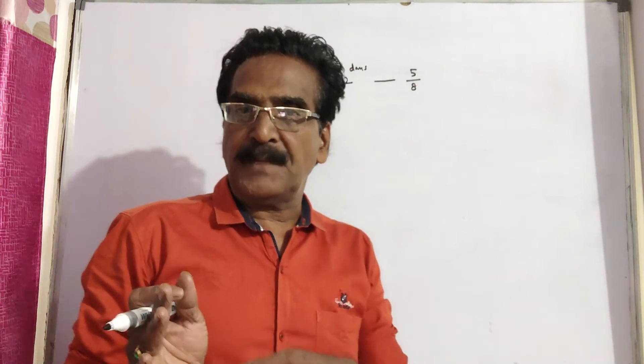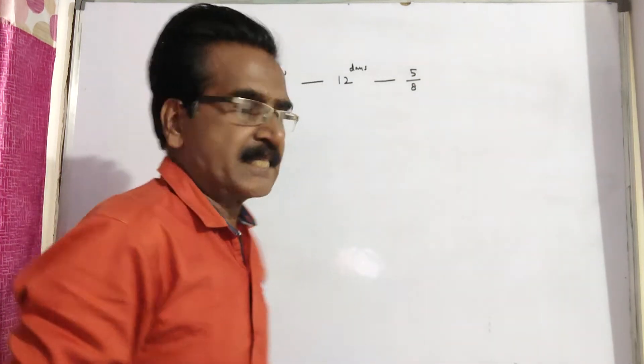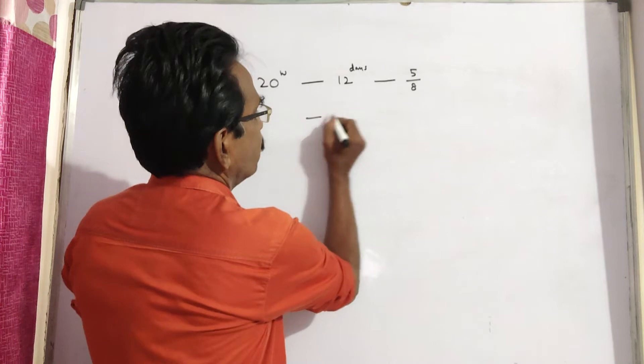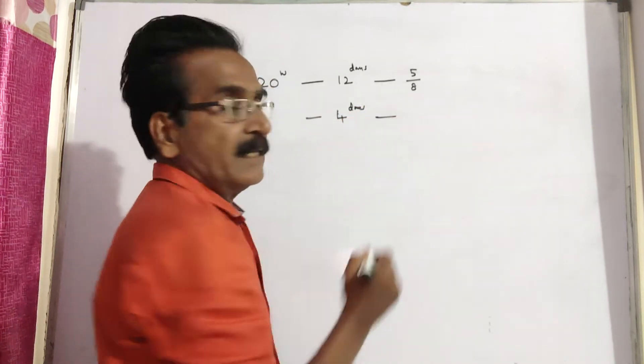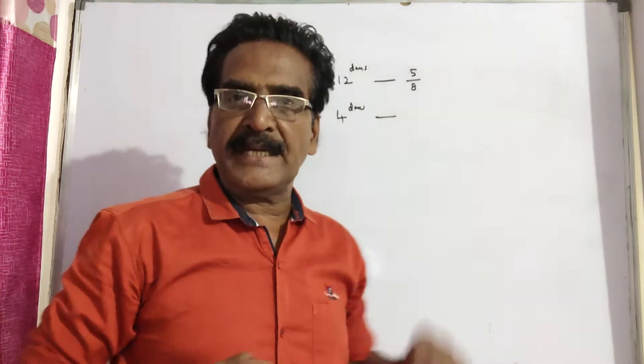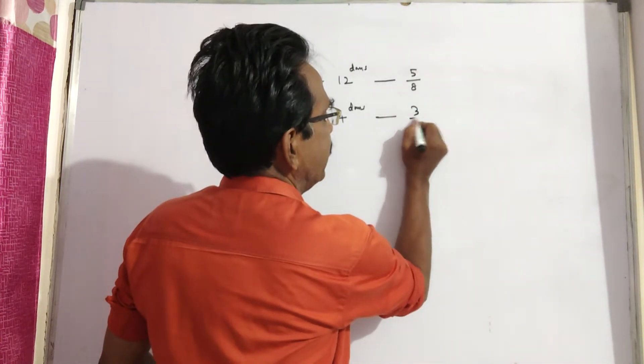The work has to be completed in 16 days. So the remaining time is 4 days, and the remaining work is 1 minus 5/8, which is 3/8.